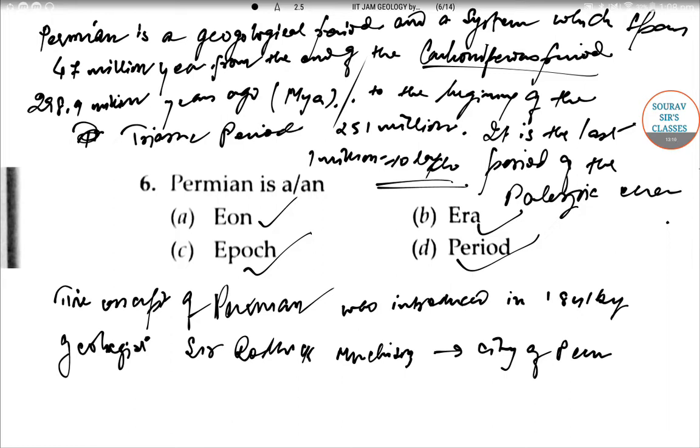So this was the explanation. According to it, it was a period, a time period which lasted 47 million years from the end of the Carboniferous period. So it is a period. Option D is the correct option. So we can write that option D is correct. I hope that you all understood this.